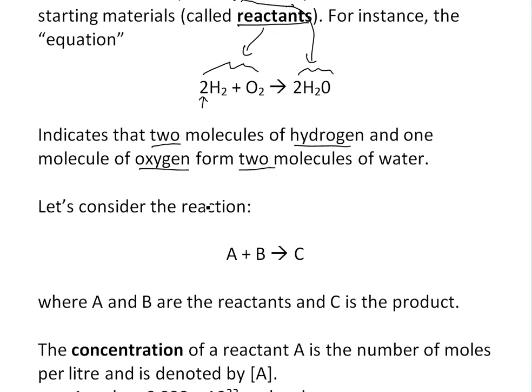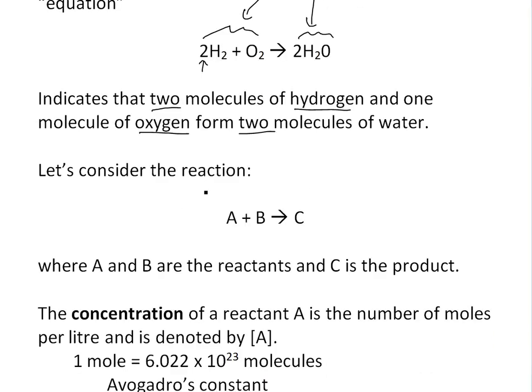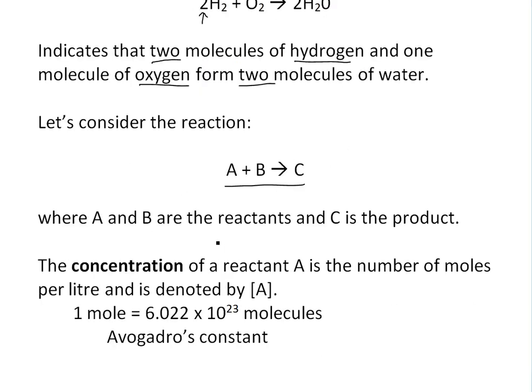I'll show that in a bit, but before I get to defining the rate of reaction, let's just consider a simple reaction like this: A plus B makes C, where A and B are the reactants and C is the product.